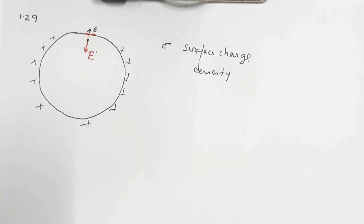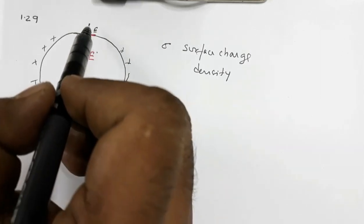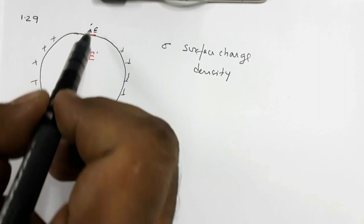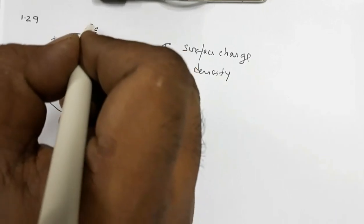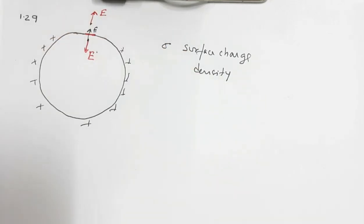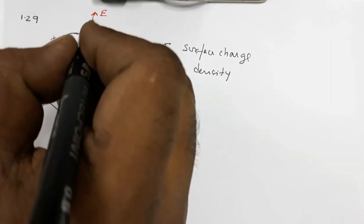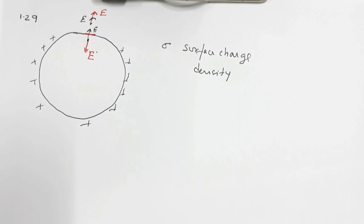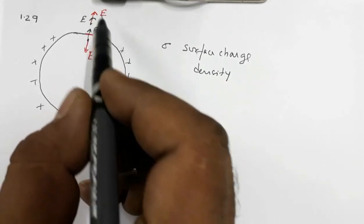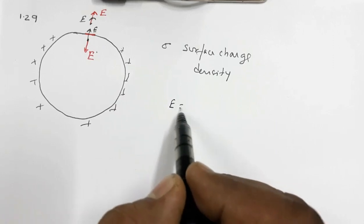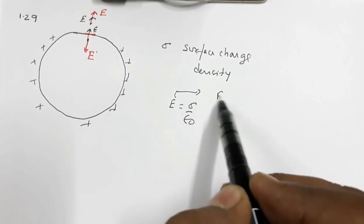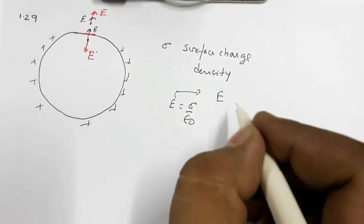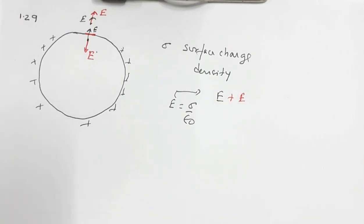Since the electric field intensity inside the conductor is zero, these two fields must have the same magnitude — only then will the resultant be zero. In the outer region outside the conductor, both the red part and the black part contribute fields in the outward direction. The resultant electric field in the outer region is E = σ/ε₀.